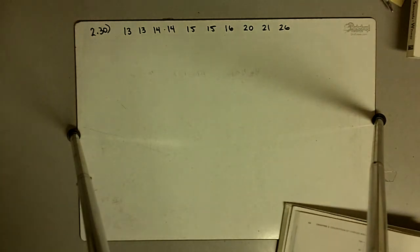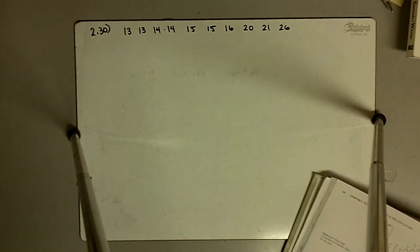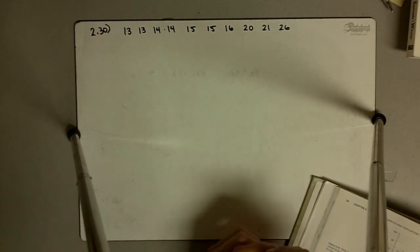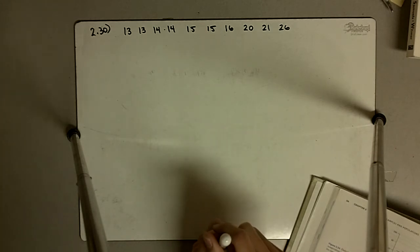This is problem 230 and it says here the data from exercise 223 on the number of virus resistant bacteria in each of 10 aliquots. Once again I've copied the same list of numbers and rearranged them from smallest to largest.